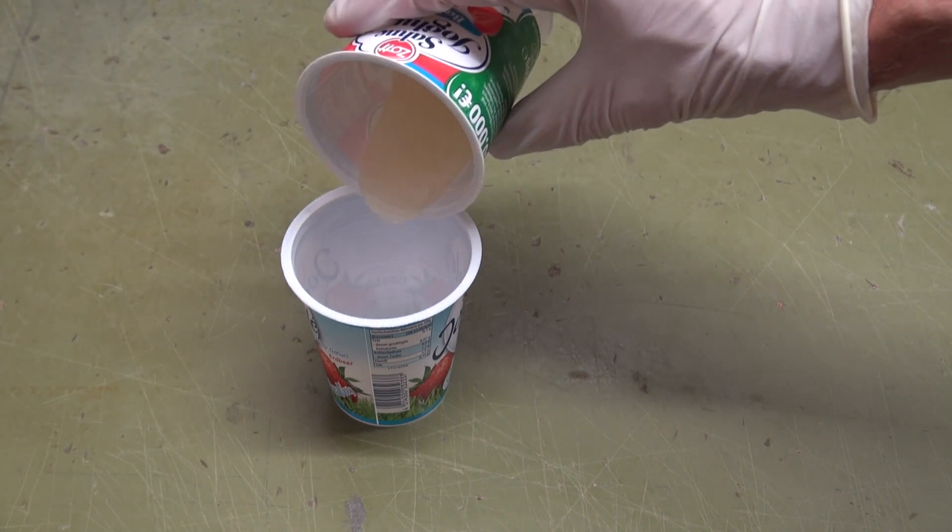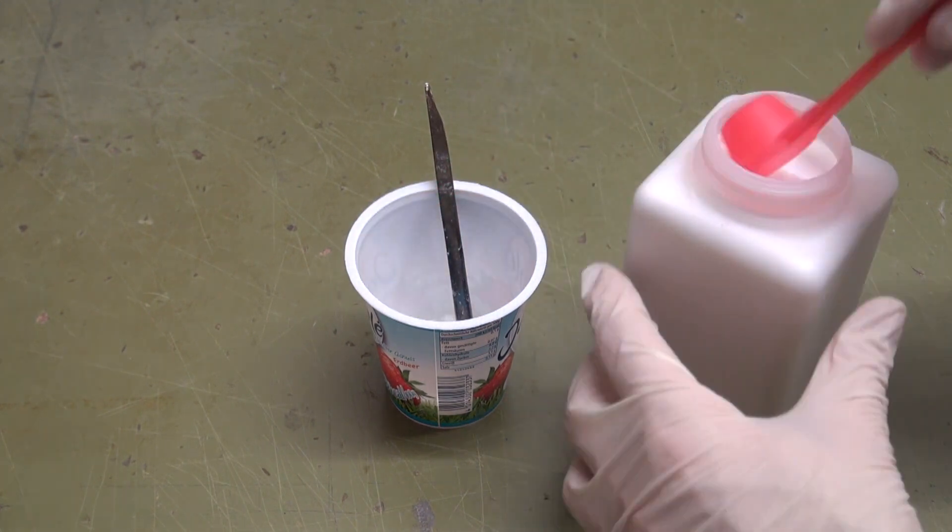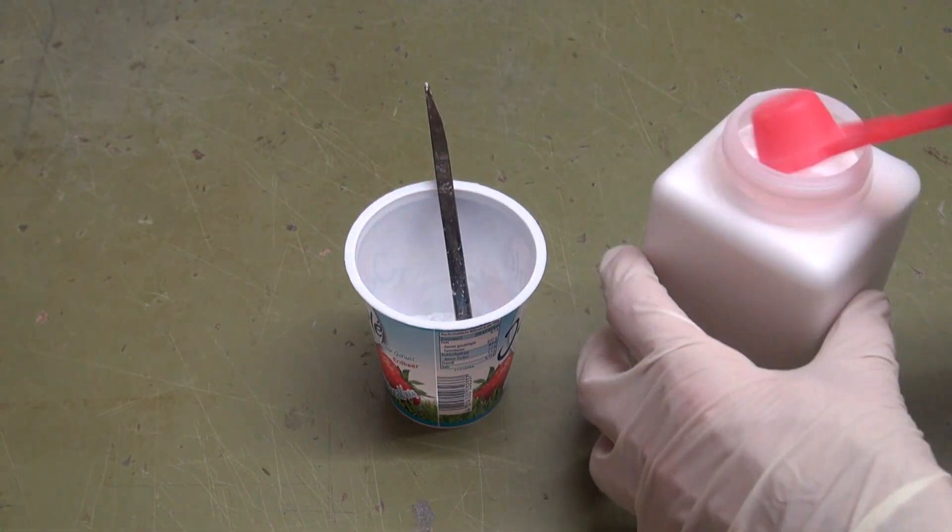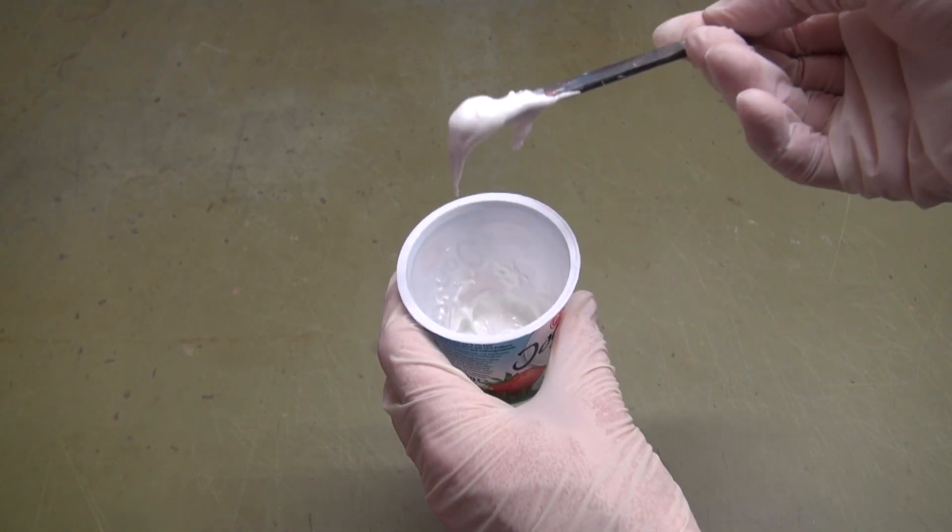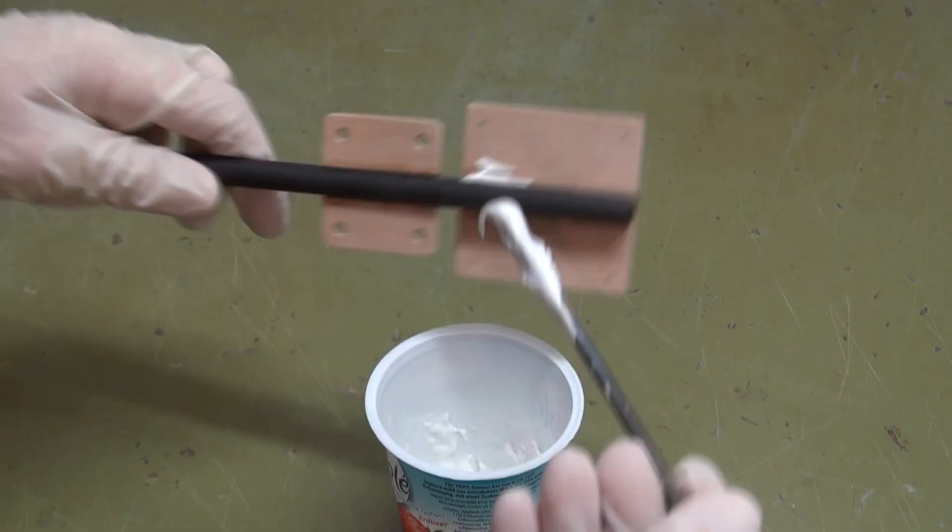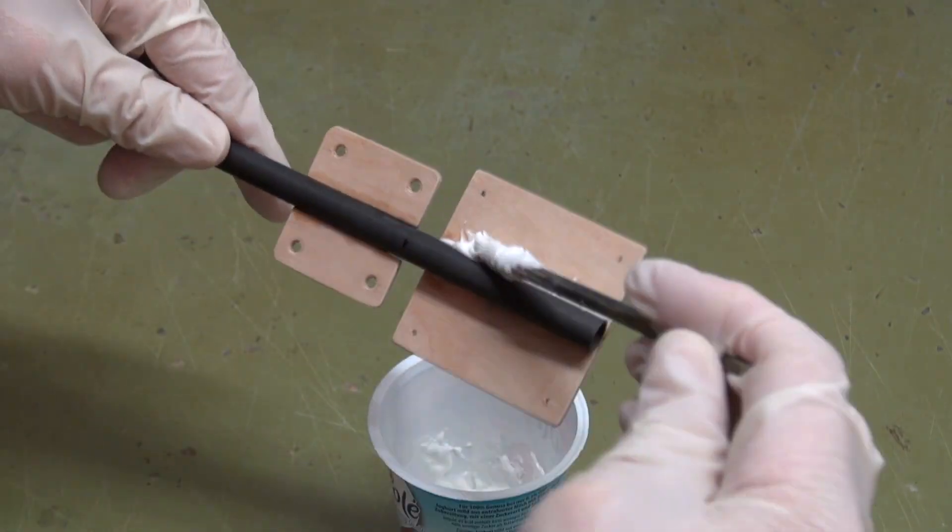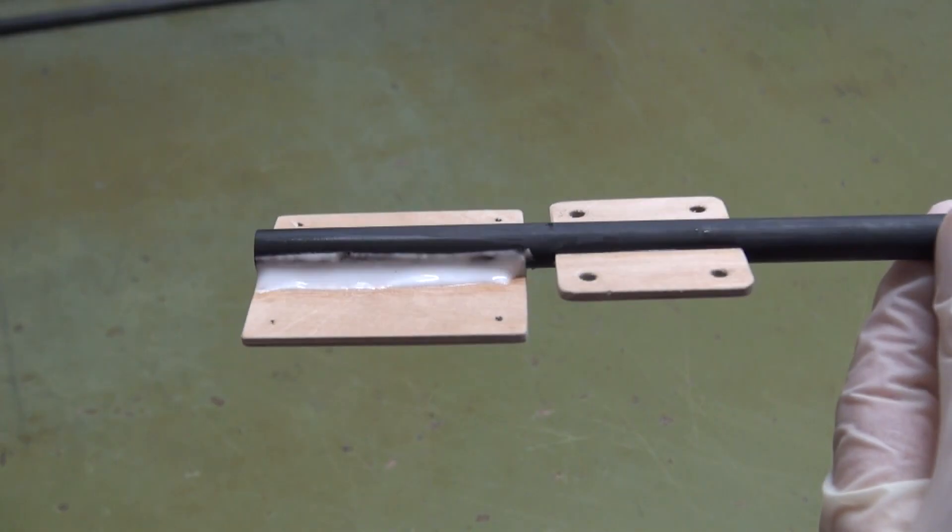Decant about one third of the resin into the second pot. Add micro balloons to this pot until the resin is thick enough. It should no longer drop from a stick. Apply it to the joint between the base plate and the carbon fiber tube to build a fillet. This will make it easier to apply the fiberglass fabric.